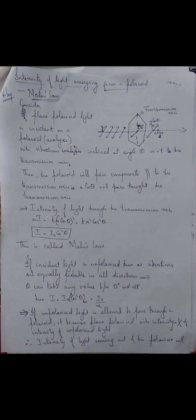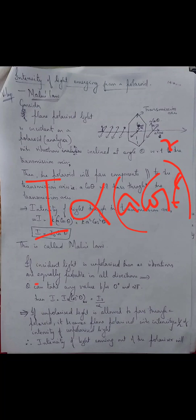The intensity of light transmitted out is proportional to the square of the amplitude. So the intensity of light transmitted will be proportional to 'a cos theta', since that is the amplitude which has passed through the polarizer. Therefore, intensity is proportional to the square of the amplitude: I = K(a cos theta)^2, which gives I = I₀ cos²θ. This is Malus's law.